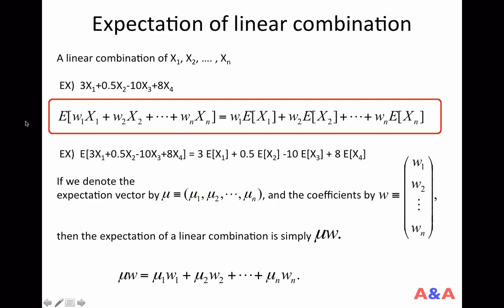The formula is that the expectation of a linear combination of random variables is simply equal to the linear combination of their expectations. Here, the X's are random variables and the w's are constants — like 3, 0.5, −10, and 8 in this example. The expectation of the linear combination can be calculated as 3·E[X1] + 0.5·E[X2], and so on. This formula is useful because as long as you know the expectations of individual random variables, you can immediately compute any linear combination of those random variables.